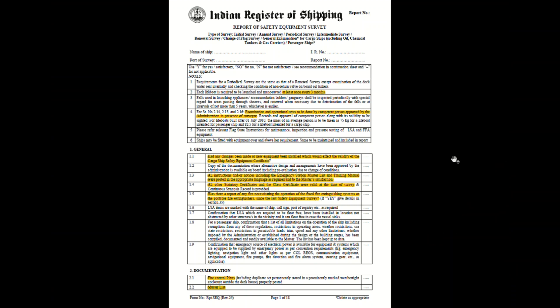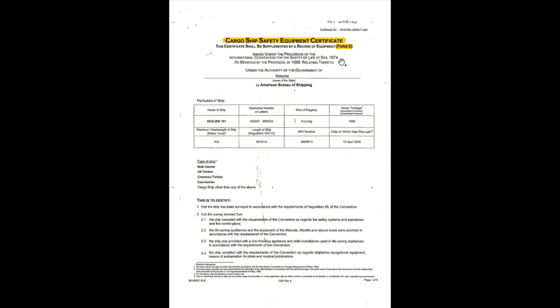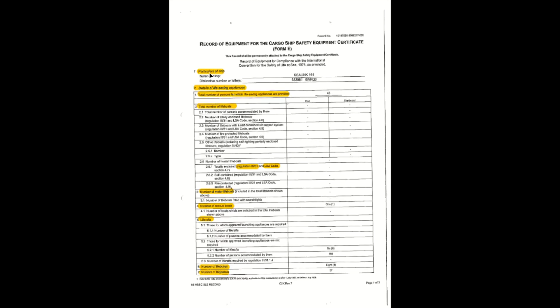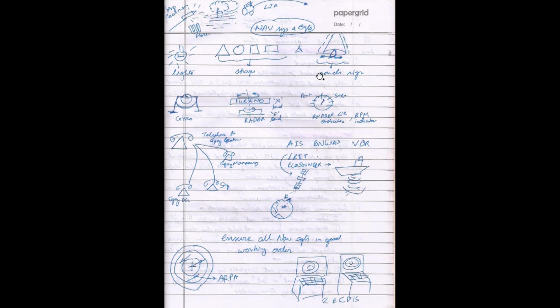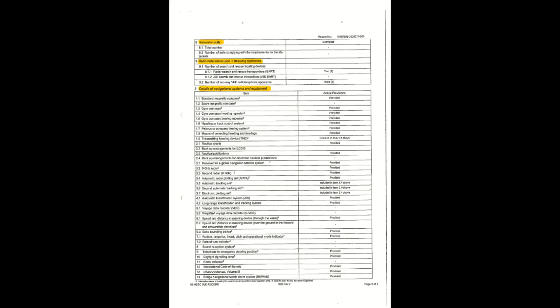I'll quickly run through what we're going to discuss today. I'll take you through the IRS report on safety equipment survey and what all the important points are. Moving on, I prepared through the actual Form E, that is the Cargo Ship Safety Equipment Certificate, and I got all my points from here. While answering to the surveyor, I used specific points detailed as particulars of the ship, details of life-saving appliances, and those points I'll discuss later. I'll also take you through a diagrammatic representation of how to remember these points.